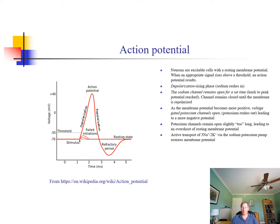Neurons are excitable cells. They'll have a certain resting membrane potential, given by the Goldman equation, and the potential difference across that membrane will be on the order of tens of millivolts. That tens of millivolts doesn't imply a very large difference of charge separation, but that charge separation is over a very small distance. When there is an appropriate signal that lies above some threshold, an action potential will result.